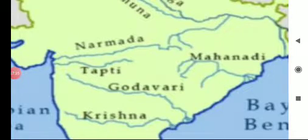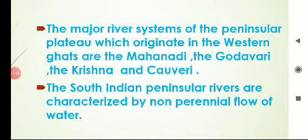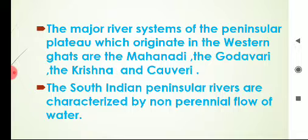Look here once again at the flowing route of Narmada and Tapati flowing towards west and falling into Arabian Sea. The major river systems of the peninsular plateau which originate in the Western Ghats are Mahanadi, Godavari, Krishna, and Kaveri. These important rivers — Mahanadi, Godavari, Krishna, and Kaveri — originate in the Western Ghats and then flow towards east and fall into Bay of Bengal.